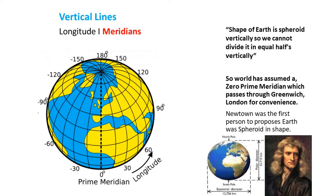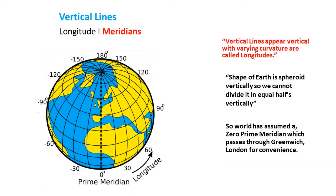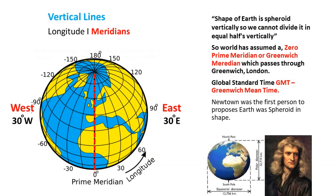Because of this shape, the world uses a zero prime meridian which passes through Greenwich, London — taken for convenience. The vertical lines with varying curvatures are called longitudes or meridians of longitude. Now let's go on to global standard time: GMT, Greenwich Mean Time.